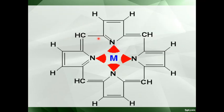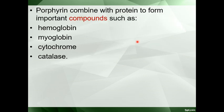Here you can see that whatever the metal is — either iron or magnesium — it is bonded to the nitrogen of the pyrrole ring. When porphyrin combines with proteins, important compounds are formed: hemoglobin, where globin is a protein; myoglobin; and cytochrome, which transfers electrons in oxidative phosphorylation, pumping hydrogen ions. Catalase is also an important enzyme that breaks hydrogen peroxide into water and oxygen.